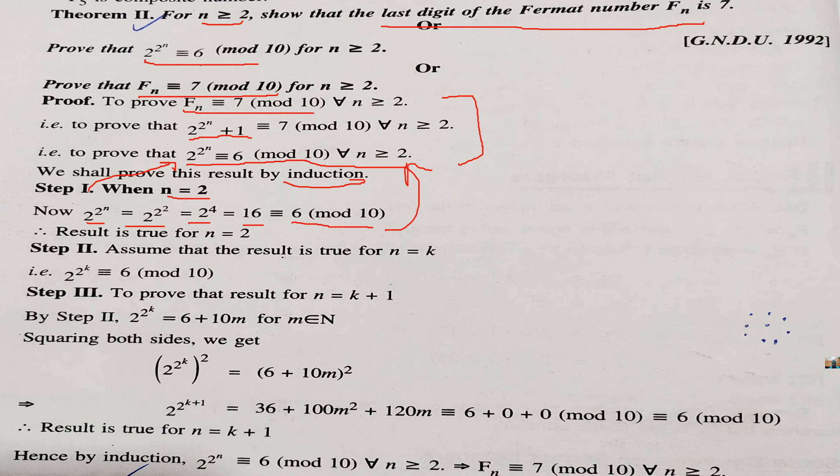If we assume that the result is true for n is equal to k, this step is okay. Now, we have to prove the result for n is equal to k plus 1. So, from step number 2, we have this step. Because we can write 6 mod 10 like this, 6 plus 10m. Squaring on both sides, we get this one.